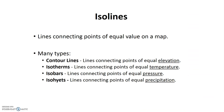Our next topic is isolines. Isolines are a very important tool for portraying information on maps. As you learned when you read your textbook, an isoline can be defined as a line that connects points of equal value. Notably, there are many different types of isolines. Four of the most common types are listed below, and we will use all of these in our class.